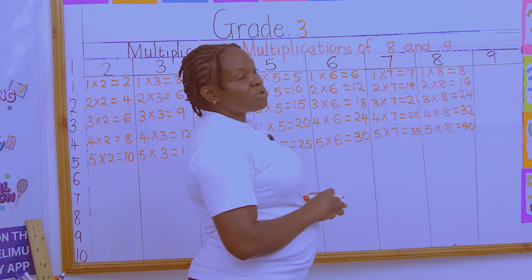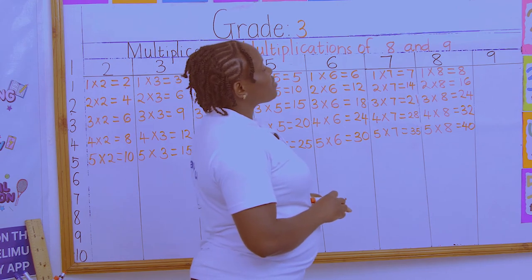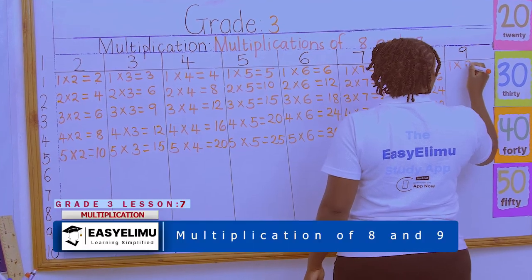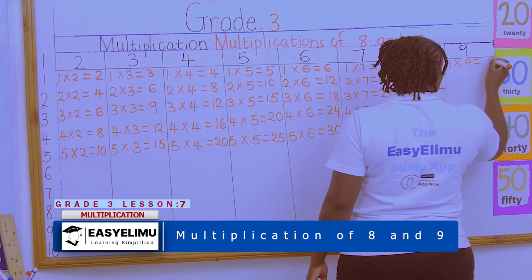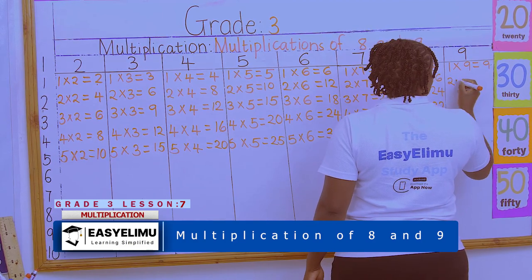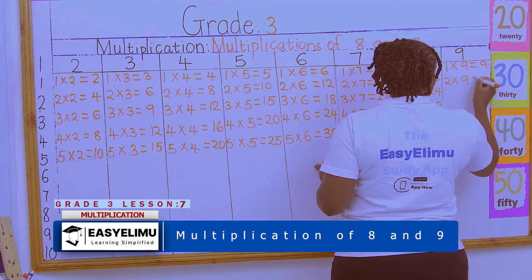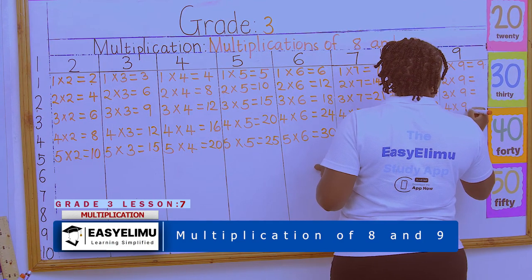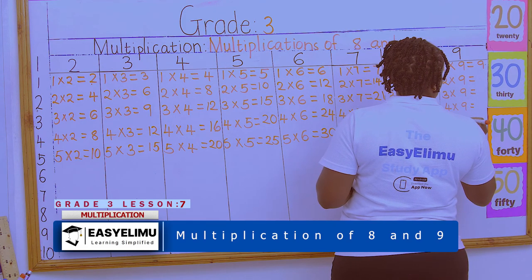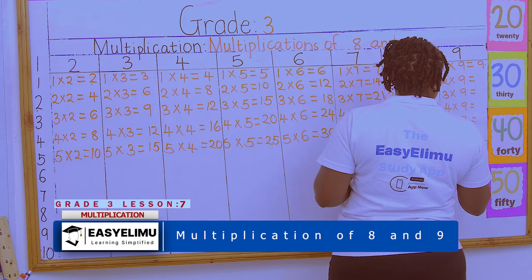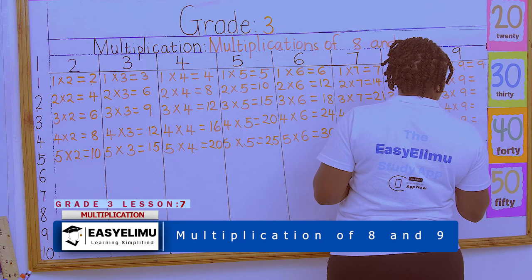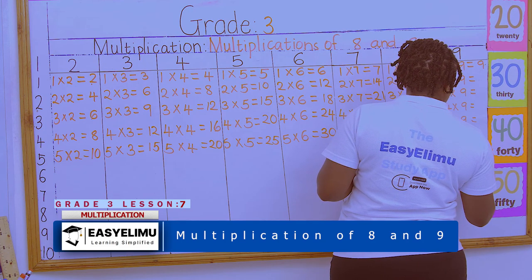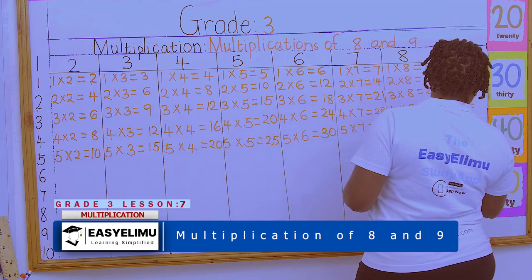For number 9, there is an easy trick. Any number times 1 is that number. Let's look at 2 × 9, 3 × 9, 4 × 9, 5 × 9, 6 × 9, 7 × 9, 8 × 9.